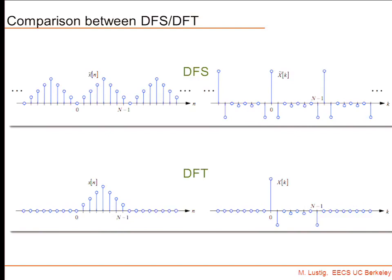Here's a pictorial representation of the difference between the DFS and the DFT. In the DFS, we assume the input signal is periodic, and the frequency domain representation is also periodic. Whereas in the DFT, we assume the entire signal outside of 0 to N minus 1 is zero — same with the frequency domain. These are small differences that don't affect the math until you start thinking about taking a bigger window. Are there any questions so far?